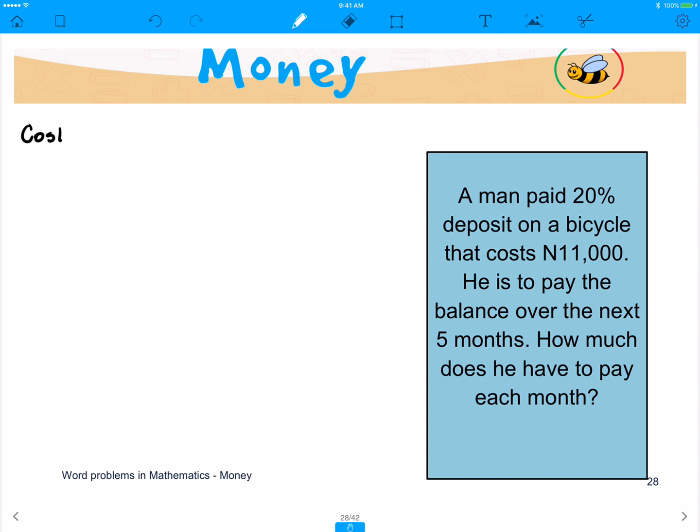The cost of the bicycle is 11,000 Naira. The deposit paid was 20% of 11,000.